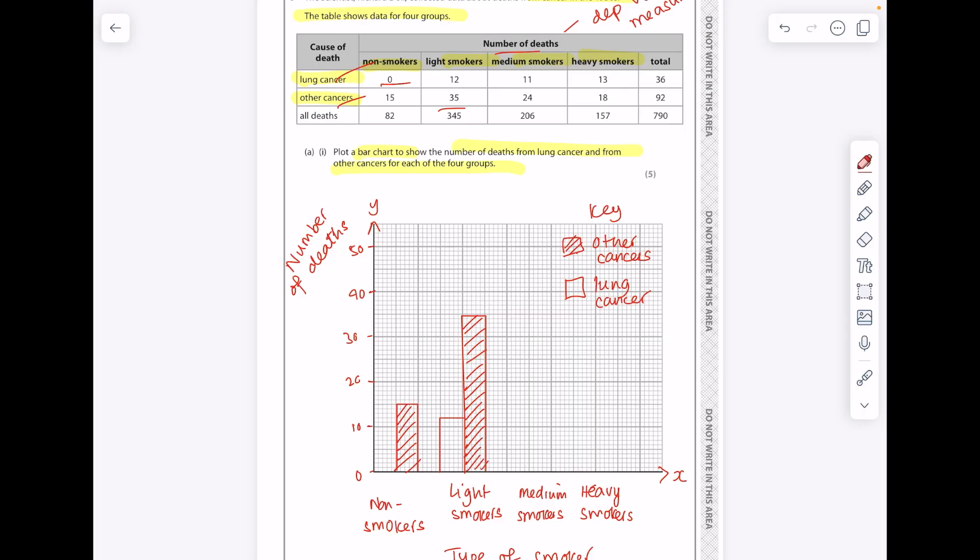Medium smokers, 11 got lung cancer versus 24 that got other cancers. So yeah, these graphs are more tricky, but I'm hoping that you'll feel more comfortable as to how you'd go about it watching this video.